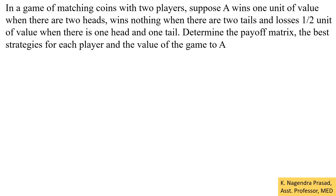Hello everyone. In this lecture we will discuss the example problem for mixed strategy game. In a game of matching coins with two players, suppose A wins one unit of value when there are two heads, wins nothing when there are two tails, and loses one unit of value when there is one head and one tail. Determine the payoff matrix, the best strategies for each player, and the value of the game to A.